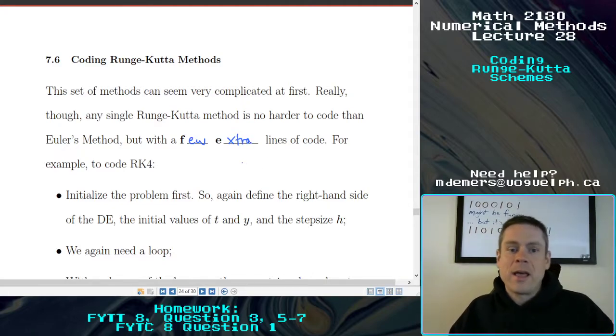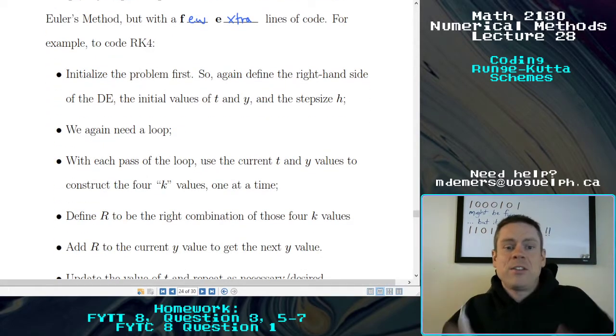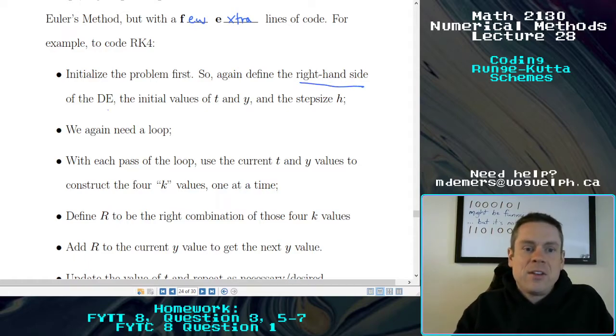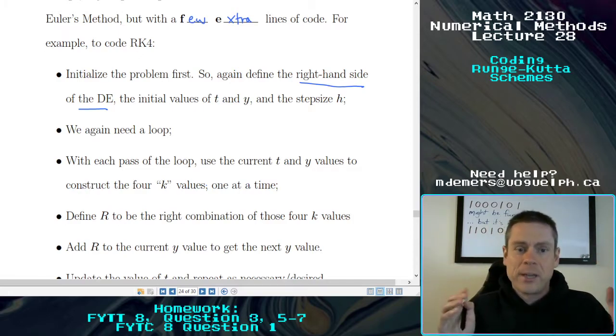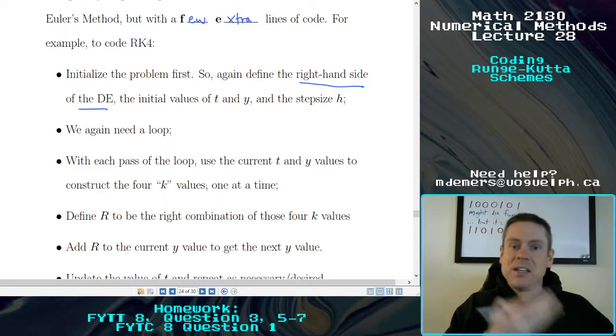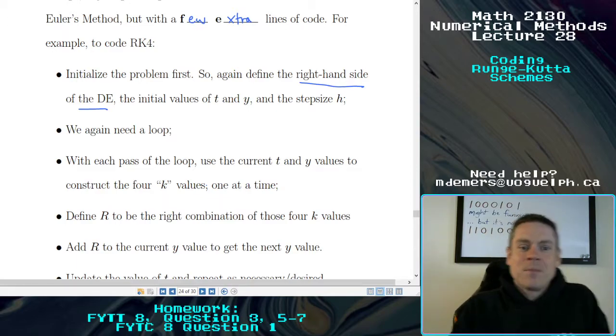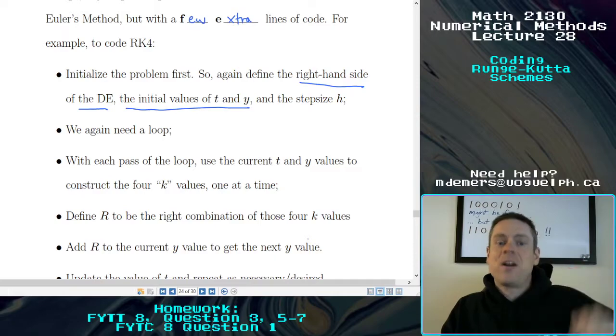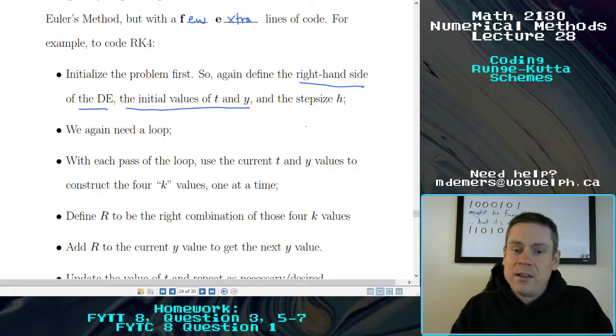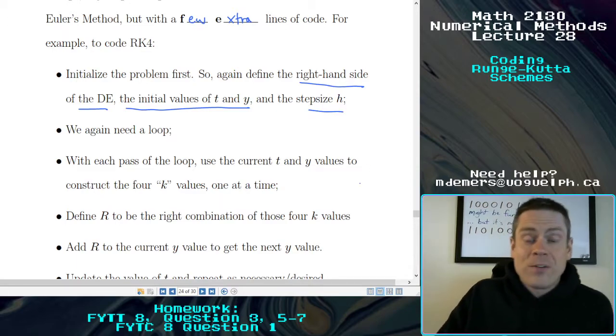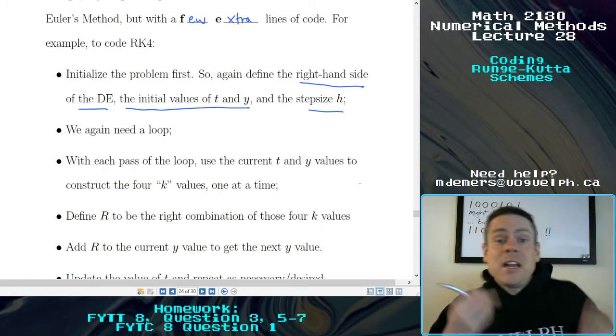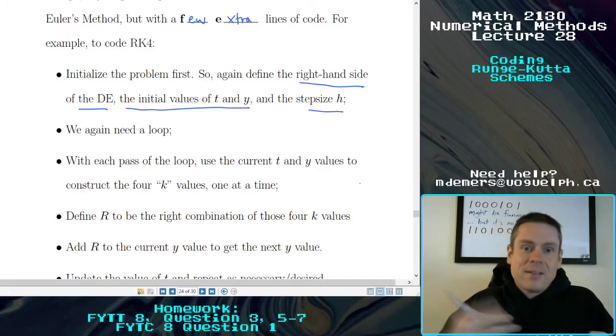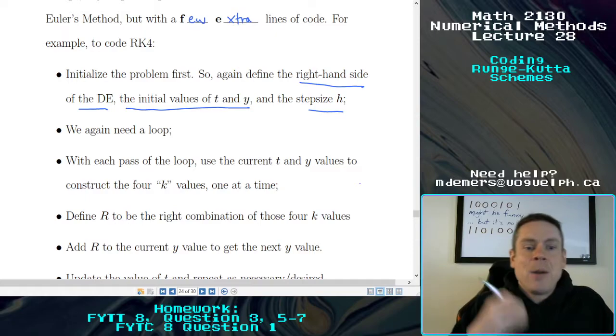So here's an example of how I would go ahead and code RK4. So you want to initialize the problem first. So you want to define whatever the right-hand side is of the DE. We have our general first order DEs or what this is going to be working on. So y' equals some function of t and y. We need to know what that function is or we can't do this thing. We absolutely need initial conditions of some sort. So we need to have that initial condition codified. We need some value for t0 and y0. And of course, we need a step size so that we know how far we have to step forward and how far each of the associated steps for the scheme are going to be. We're going to need a loop because it's not going to be enough. We're going to need to repeat some steps again and again. We need that iteration to happen.